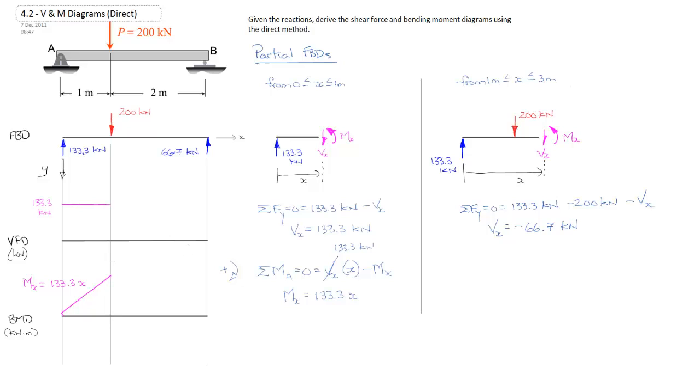So we see that it is constant. And I'll go ahead and draw that in on our curve and finish off the shear force diagram by connecting the various lines. Negative 66.7 kilonewtons.